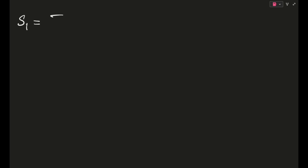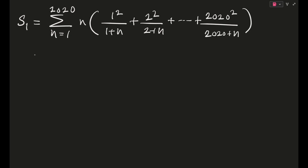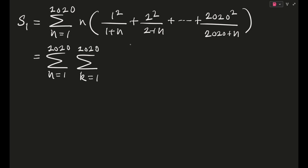Now for the second question, which asks about S1. S1 was given as σ(n=1 to 2020) of n·[1²/(1+n) + 2²/(2+n) + … + 2020²/(2020+n)]. We can write this as a double sum: σ(n=1 to 2020) σ(k=1 to 2020) of n·k²/(n+k).